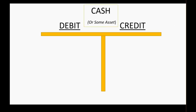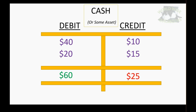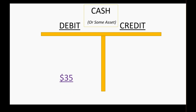For example, with a T-account for cash, every plus to cash goes on the debit side and every minus goes on the credit side. After accumulating transactions during the month, you take the total credits and total debits and combine them. If this account has $25 in credits and $60 in debits, the debits are more, so the account finishes with a debit balance of $35 — the number that begins the next month.